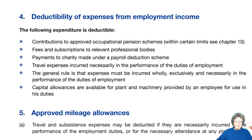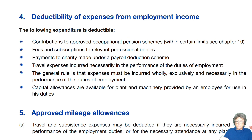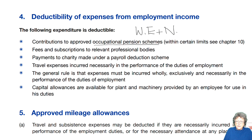Expenses: these are the ones that you are allowed — wholly, exclusively, and necessarily incurred. So contributions to a pension scheme, for example. There is a chapter on pensions, so make sure that you look at that.